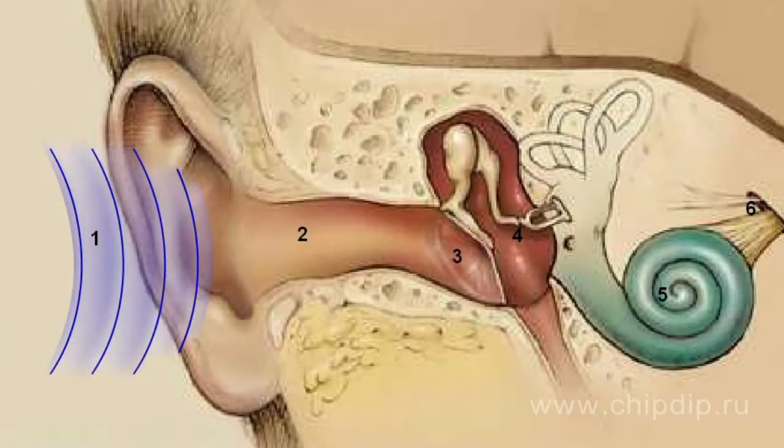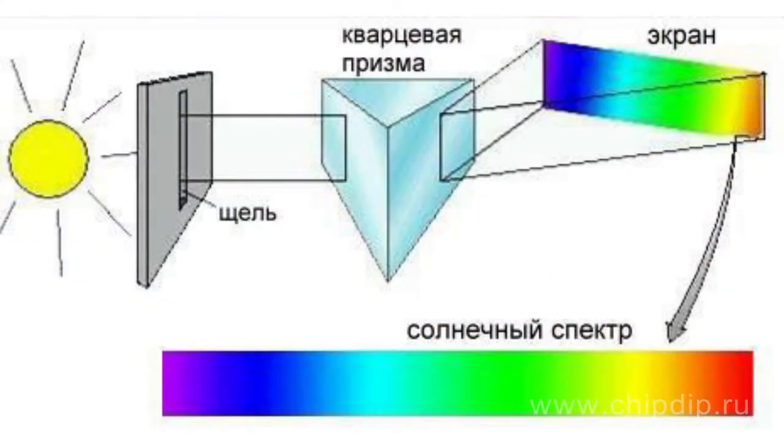Fourier transformation happens every time when we hear a sound. Our ear does automatic calculation our conscious mind can do only after several years of math studies. Our hearing organ provides transformation, rendering sound as oscillatory motion of particles of elastic medium propagating as waves. It propagates in the form of a spectrum of successive volume values for tones of various pitches. Our brain transforms this information into perceived sound.